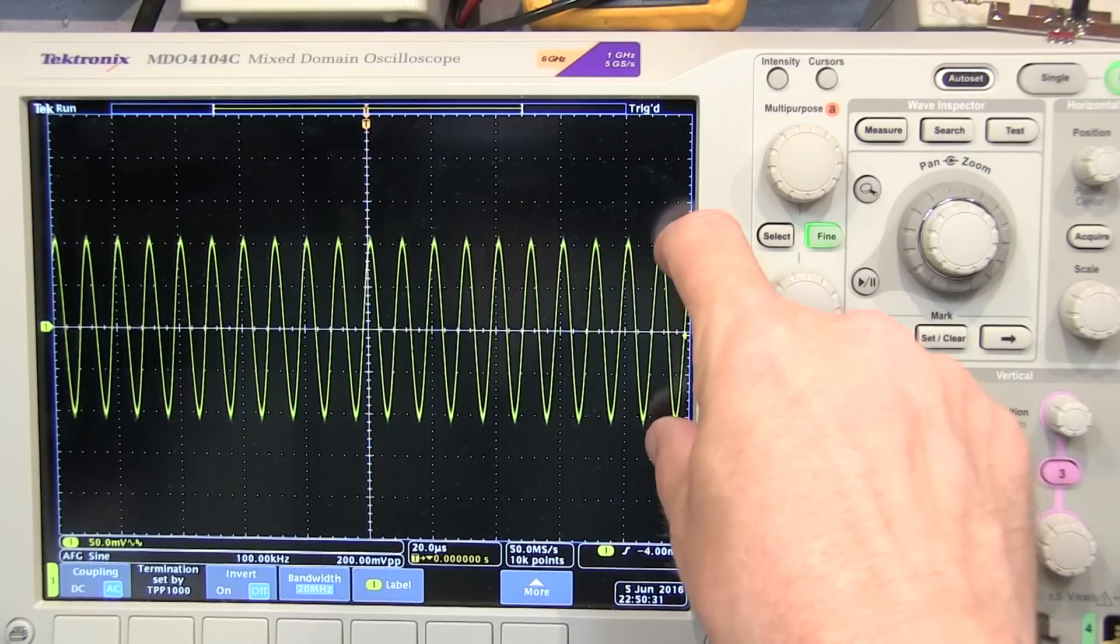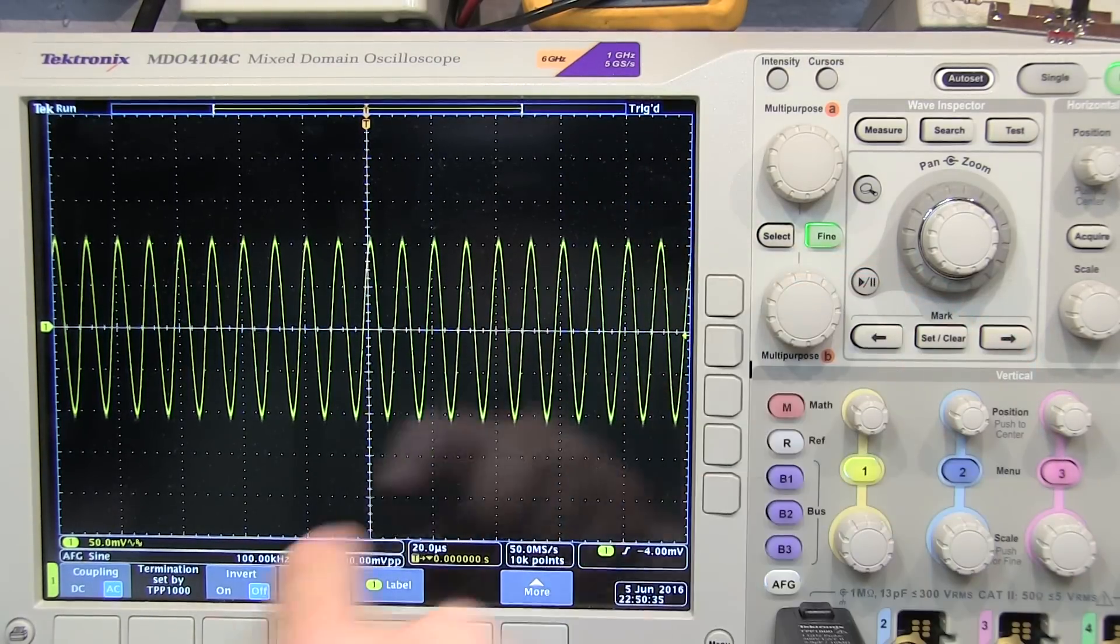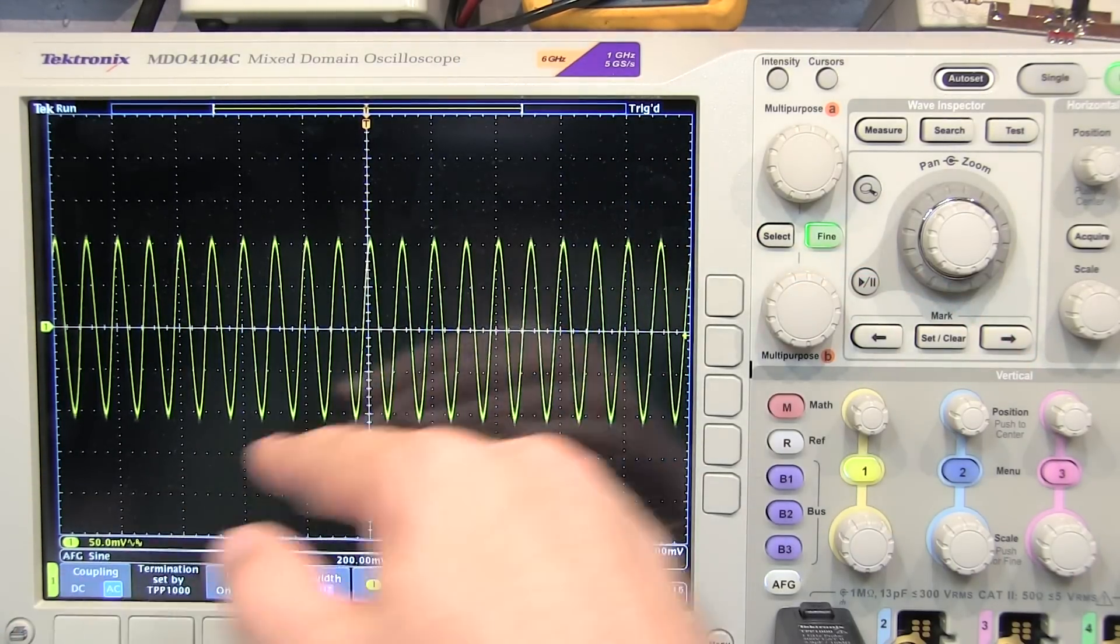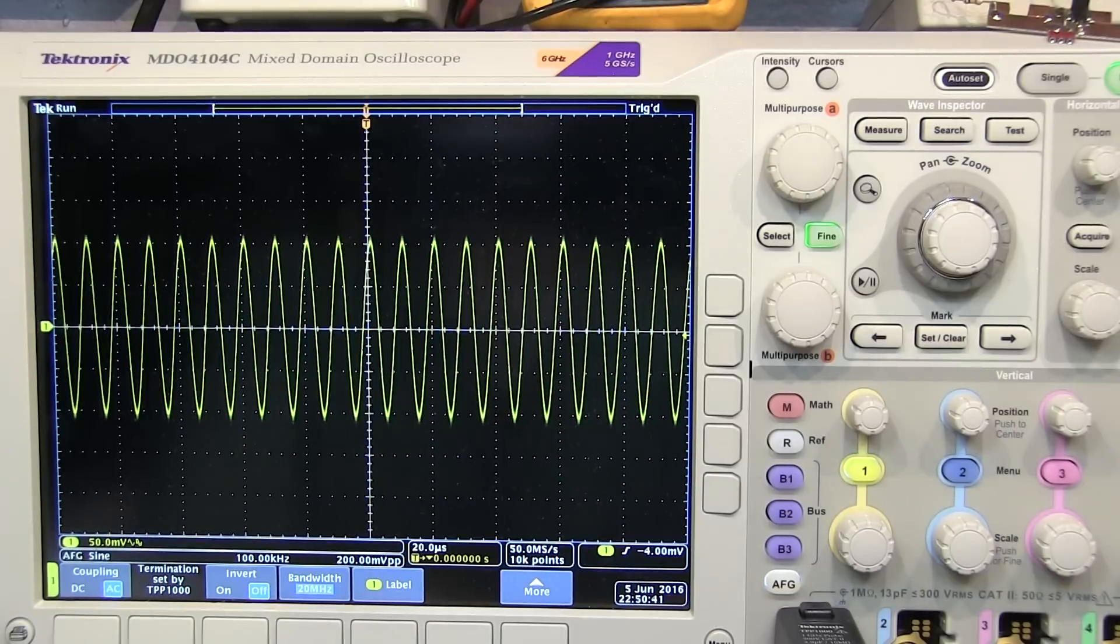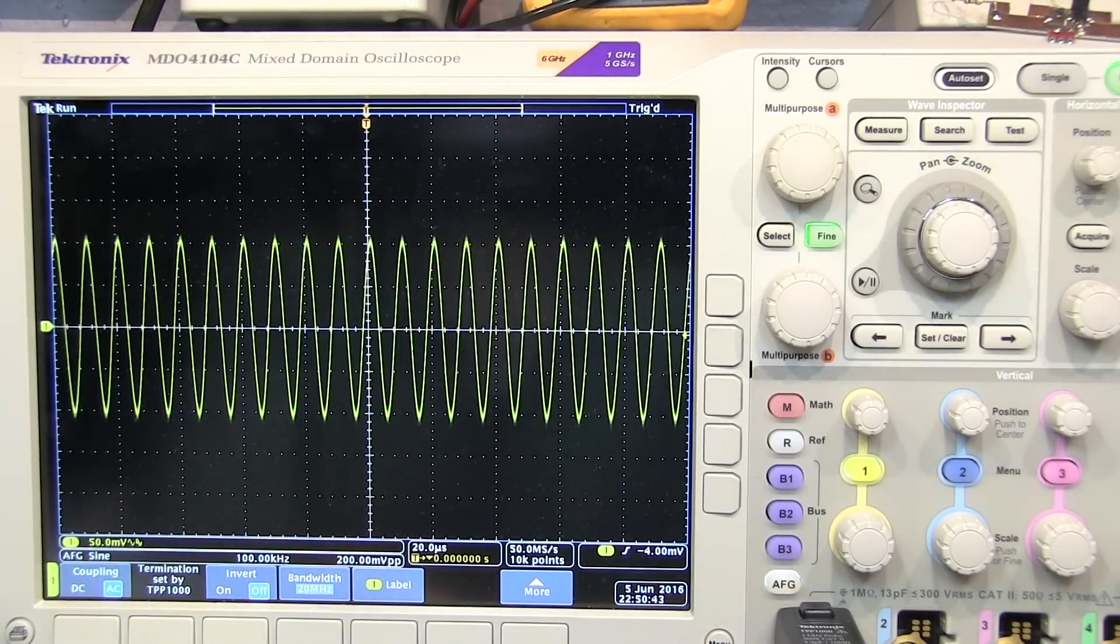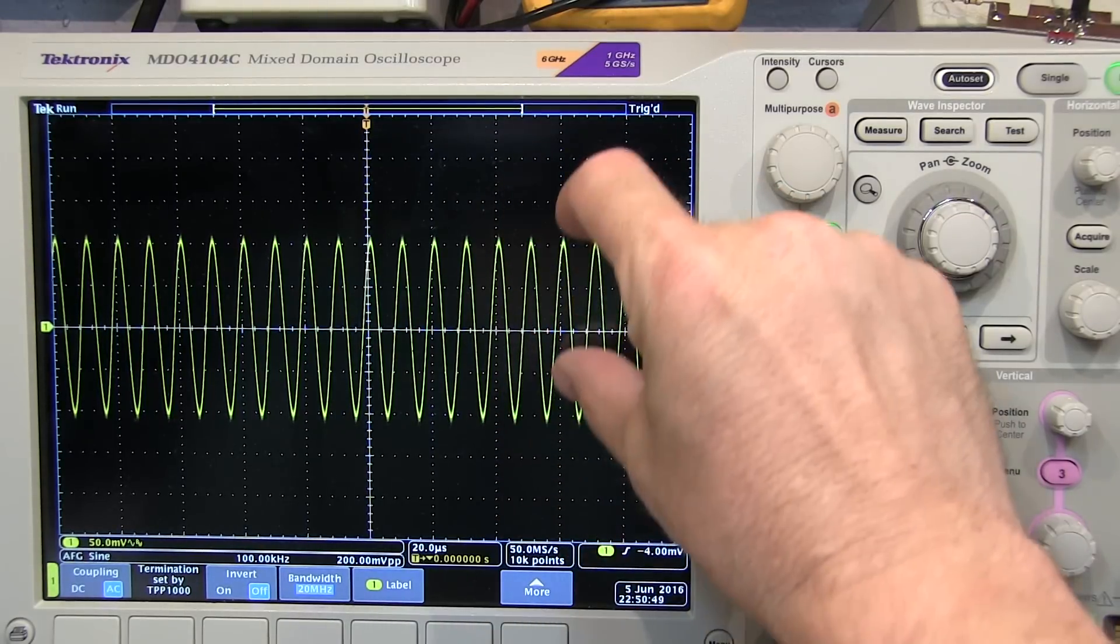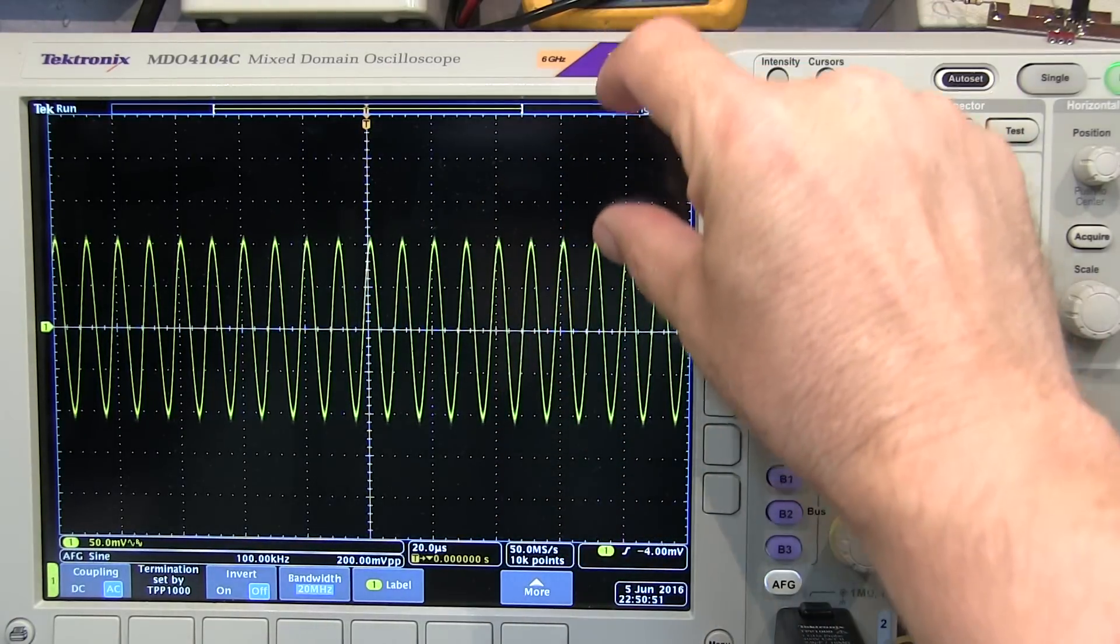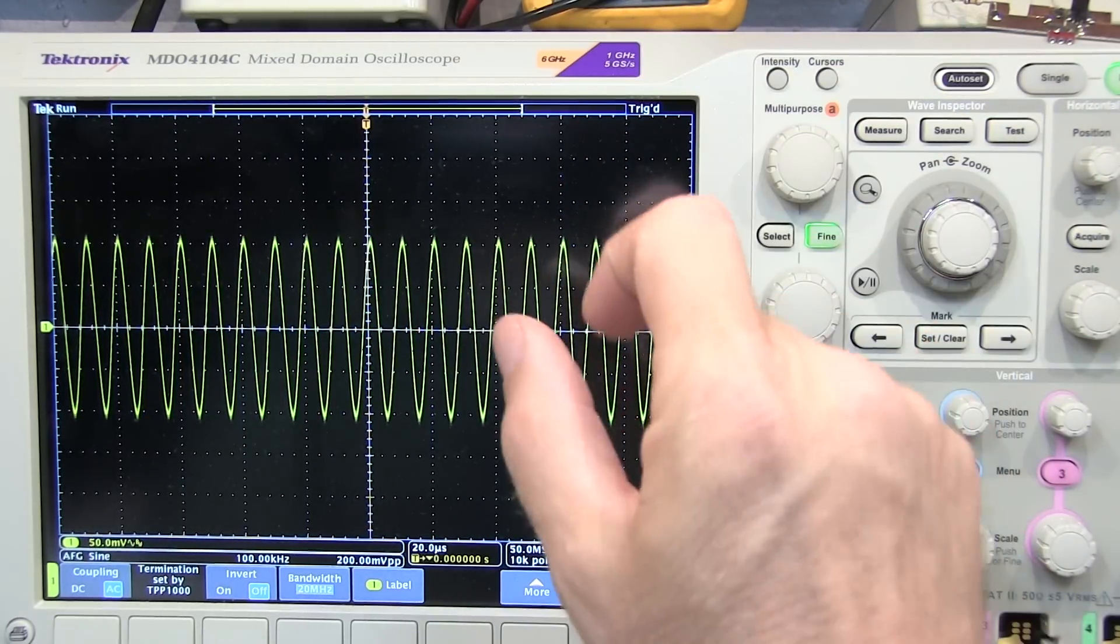And that works fine if all you're interested in is looking at the AC content of the signal. But once you AC couple the scope, you lose all the information about where the DC level is of that waveform in the circuit. And there might be situations where you actually want to monitor not only the AC content of the waveform, but its DC bias level, and where it is with respect to your power supply rails.